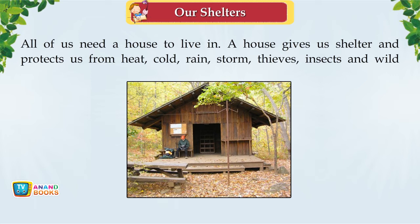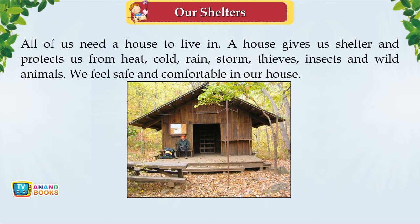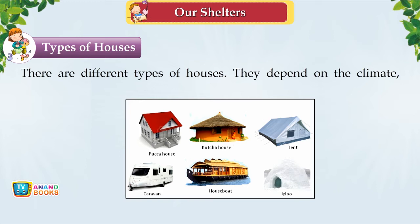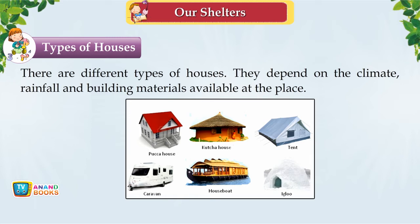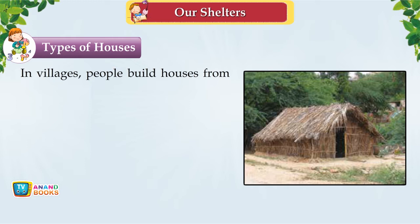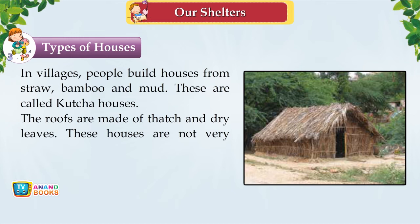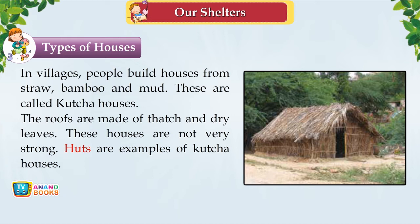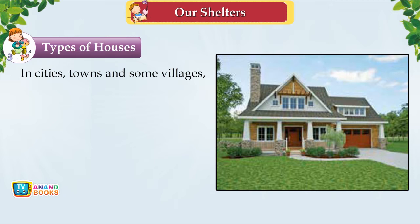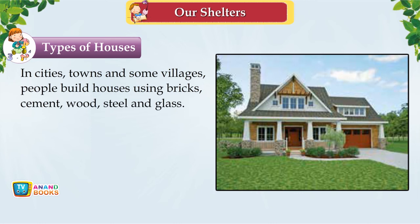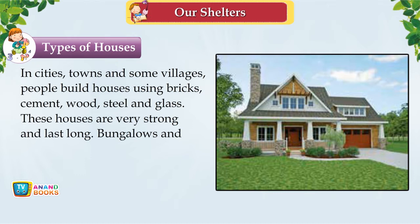Types of Houses. There are different types of houses depending on the climate, rainfall and building materials available. In villages, people build kaccha houses from straw, bamboo and mud with roofs of thatch and dry leaves — these are not very strong, and huts are examples. In cities, towns and some villages, people build pucca houses using bricks, cement, wood, steel and glass — these are very strong and long-lasting. Bungalows and multi-storey buildings are examples.